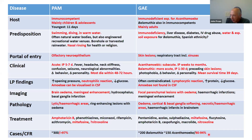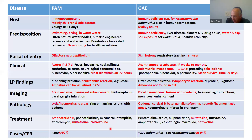Regarding treatment: the traditional and still primary treatment for PAM is amphotericin B — that's the vital agent. Recently, miltefosine and now nitroxoline are probably going to be important if you can get them. For GAE, those same two newer drugs appear to have a role. The prognosis for PAM carries nearly 100% mortality; in the US there have been fewer than 10 survivors, most of them children.